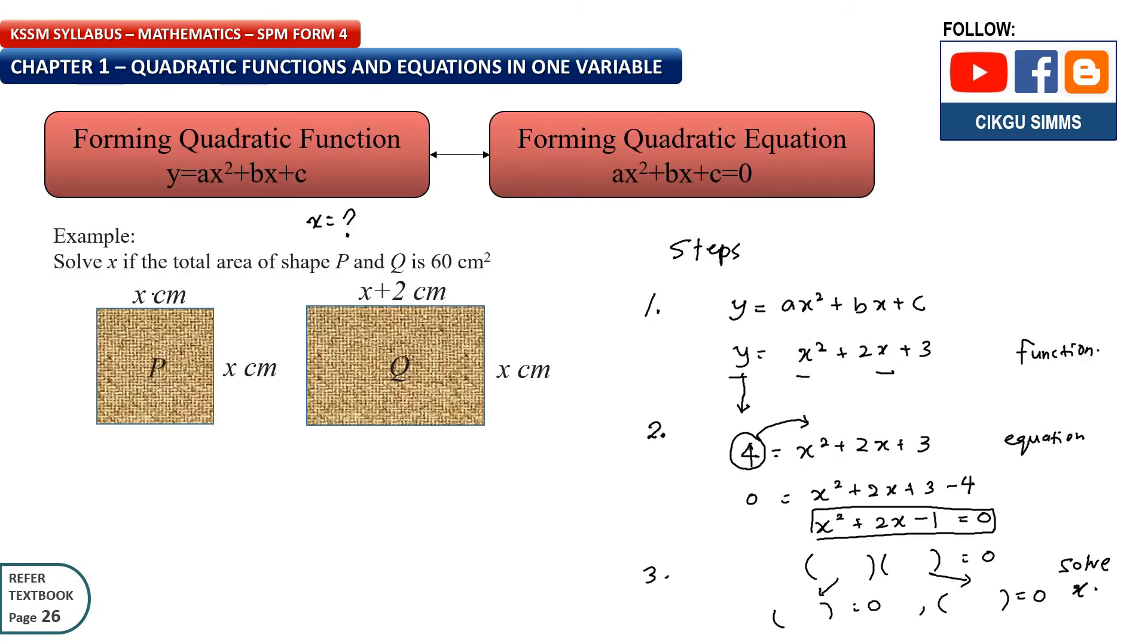So this is the example. So x and here also x and this side is x plus 2. This side is x and then the question asks you to solve for x if the total area of shape P and Q is 60 cm squared.